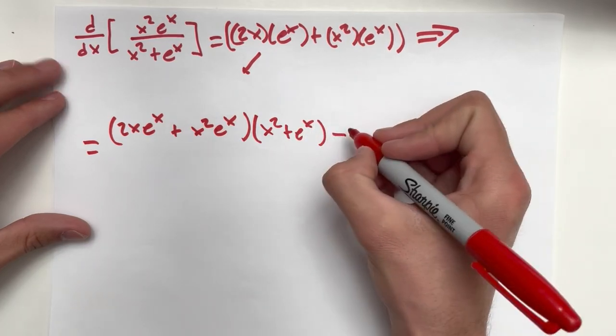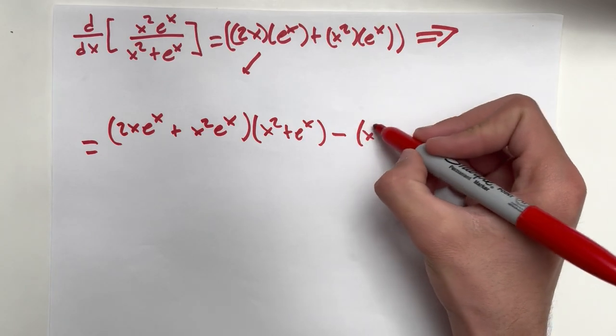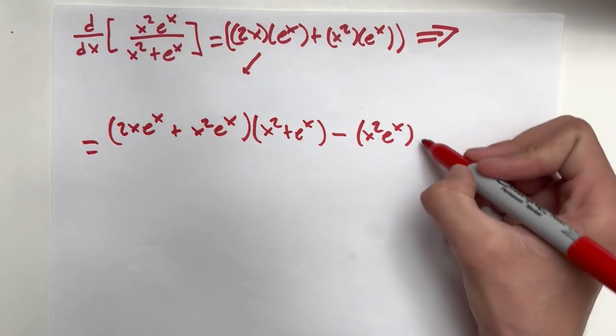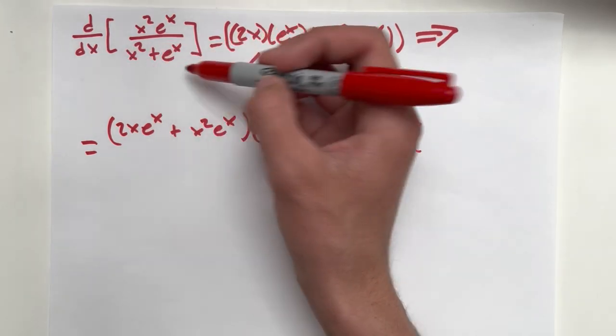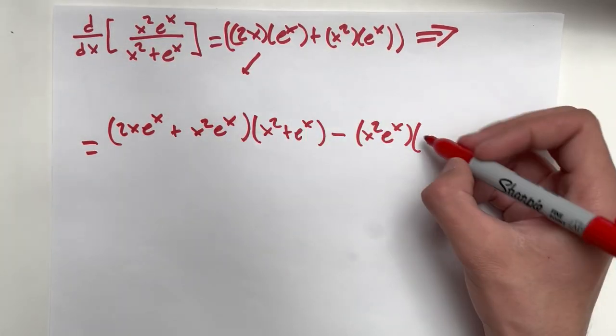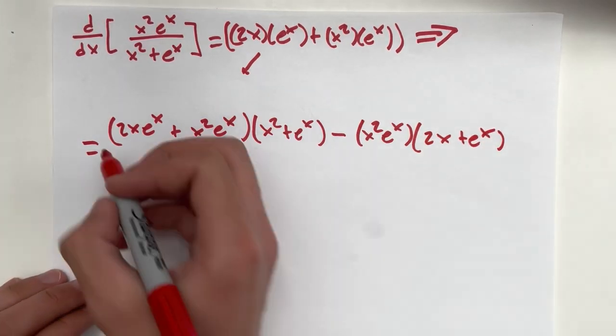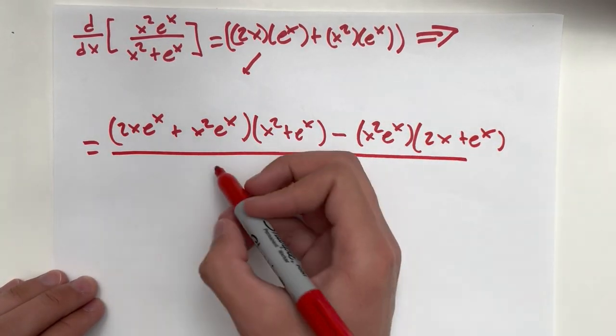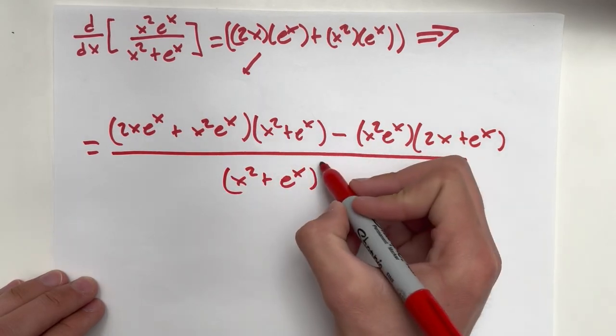Minus, now we need to take the first term untouched, x squared e to the x times the derivative of the bottom. So again, we're just going to apply linearity. So that's 2x plus e to the x, which is that derivative plus e to the x. And all of this is over x squared plus e to the x squared.